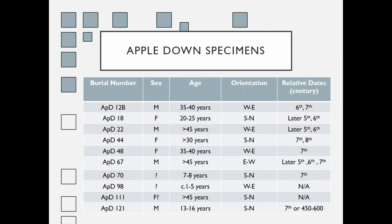I have already dated approximately ten individuals from this site. There is a mixture of males and females, mostly adults with one child and one adolescent. They are dating mostly between the later 5th century and 7th century, based on varying relative dates from knife typologies and spearhead typologies.